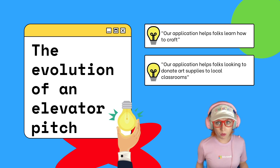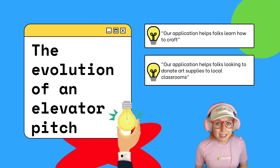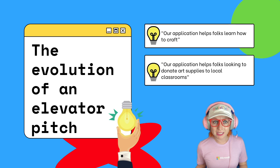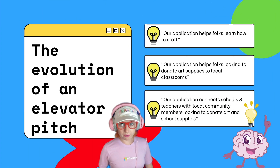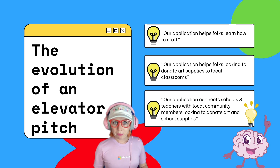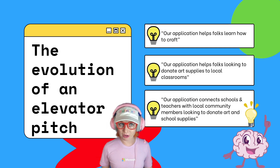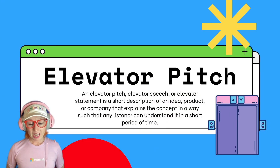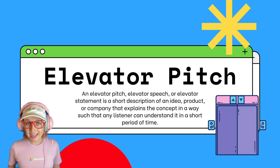If you remember from our previous video, being able to speak with and empathize with the real potential users is a key step in making sure that our product is successful among our potential user demographic. So in this example, I'd likely change my elevator pitch to: our application connects schools and teachers with local community members looking to donate art and school supplies. If your new elevator pitch is way different from when you started, don't worry — that's good. That means you likely made some updates after speaking with potential users and you're thinking more critically about your project and the problems it'll solve.